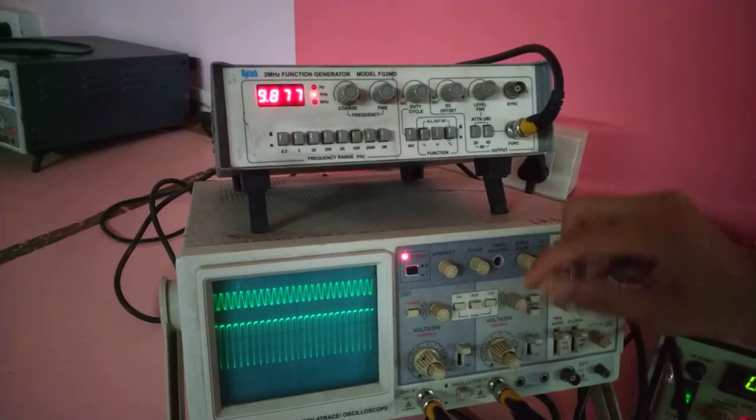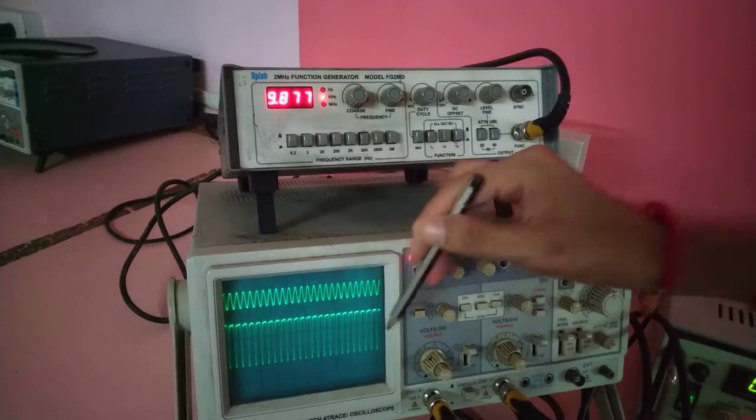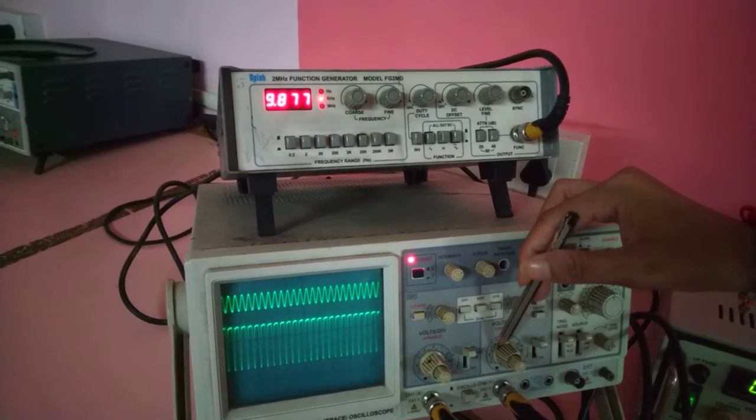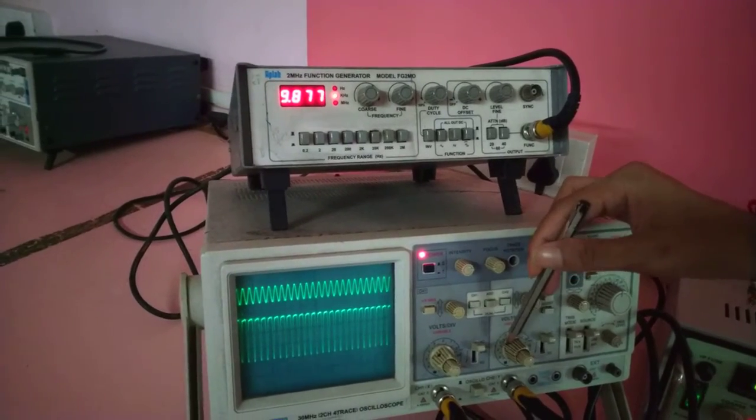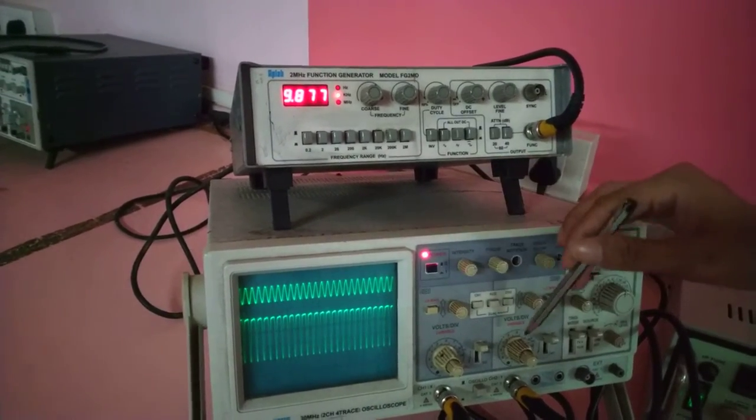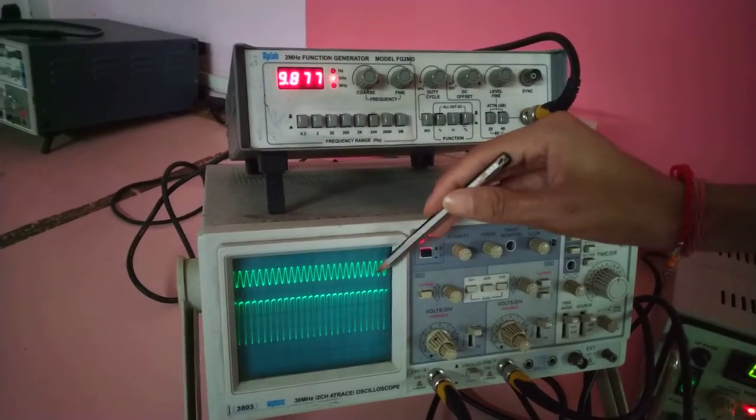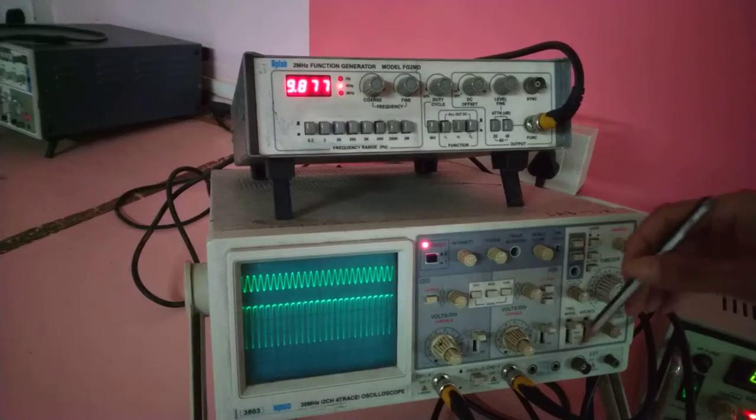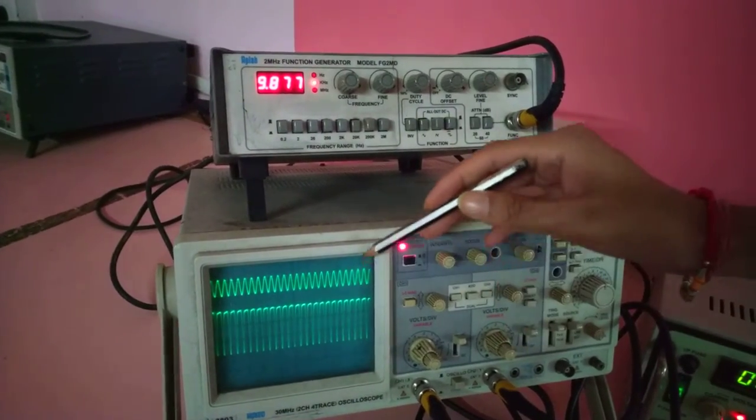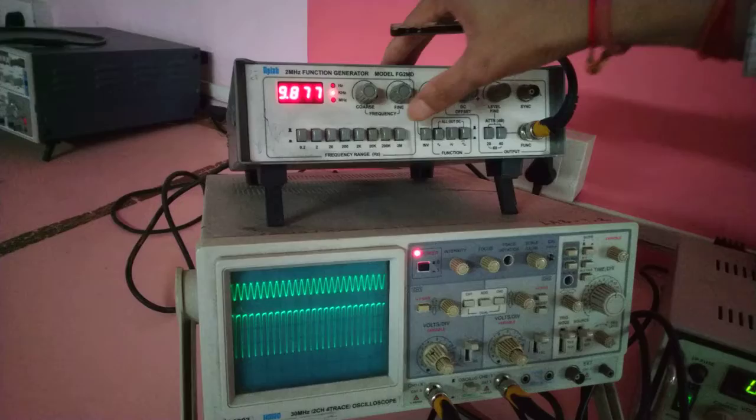So the output is almost 1, 2, 3, 3 into, this is 1000 millivolt or 1 volt. So 3 volt peak to peak output we are getting or that is 3000 millivolt for an input of 20 millivolt. 3000 millivolt output for an input of 20 millivolt.